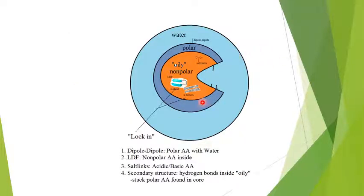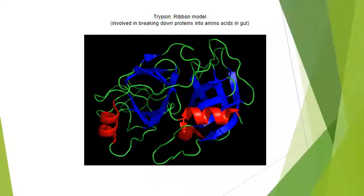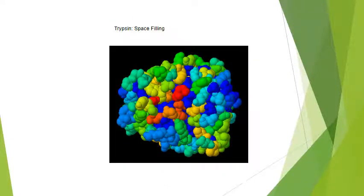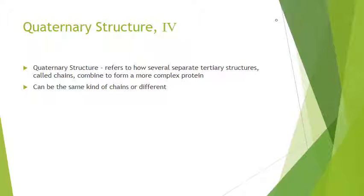Here's a picture showing the non-polar part in the middle with the secondary structure also in the middle, helping to lock in the structure and make the protein very stable. There's one more type of structure called quaternary structure — this is when you have more than one tertiary structure combined to make a more complex protein. Not all proteins form quaternary structure; trypsin, for example, exists as just one fold.